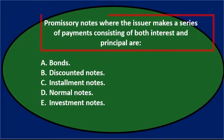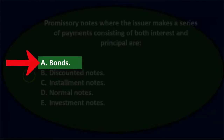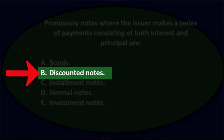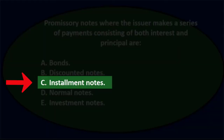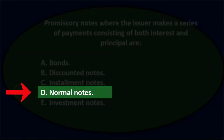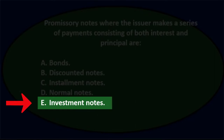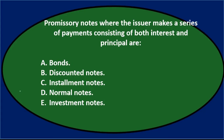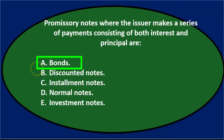First question: promissory notes where the issuer makes a series of payments consisting of both interest and principal are: a) bonds, b) discounted notes, c) installment notes, d) normal notes, or e) investment notes. Notes and bonds are different — it's not going to be a bond.